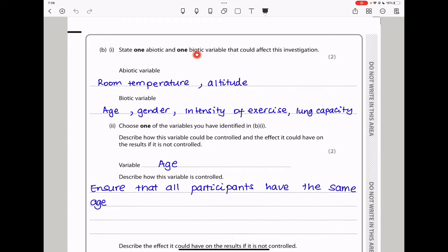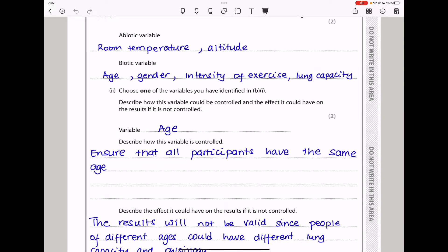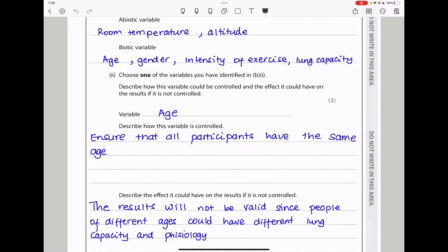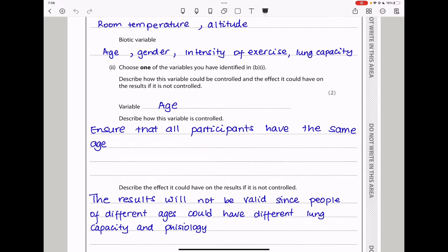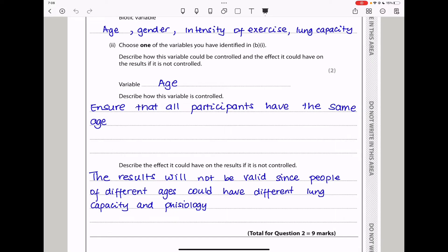Part B says, state one abiotic and one biotic variable that could affect this investigation. The abiotic variable could be room temperature as well as altitude. And the biotic one could be age, gender, the intensity of exercise as well as lung capacity. Then down here they said, choose one of the variables you have identified in B1. Describe how this variable could be controlled and the effect it could have on the results if it's not controlled. I chose age. Ensure that all participants have the same age and that means we can control the results or we can get results that are reliable. So if age is not controlled or if people are not the same age, the results will not be valid because people of different ages could have different lung capacity as well as physiology. So this brings us to the end of question two.